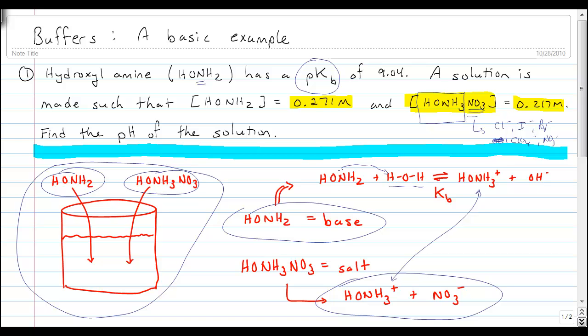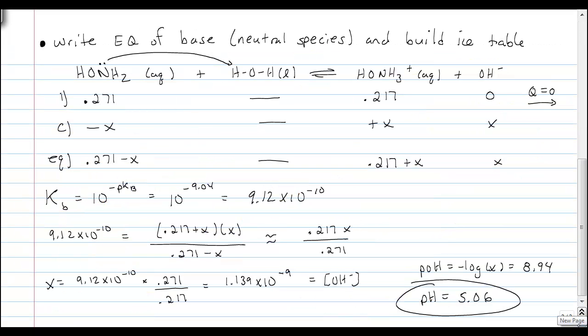So now we can go ahead and solve this. It's not that hard of a problem now that we've identified what's in there and what we need to write as our equilibrium. Very quickly, when you write one of these equilibriums, you're going to write it for the neutral species, for the acid or the base, not the conjugate acid or conjugate base that you have. So the neutral species in this case is the hydroxyl amine.